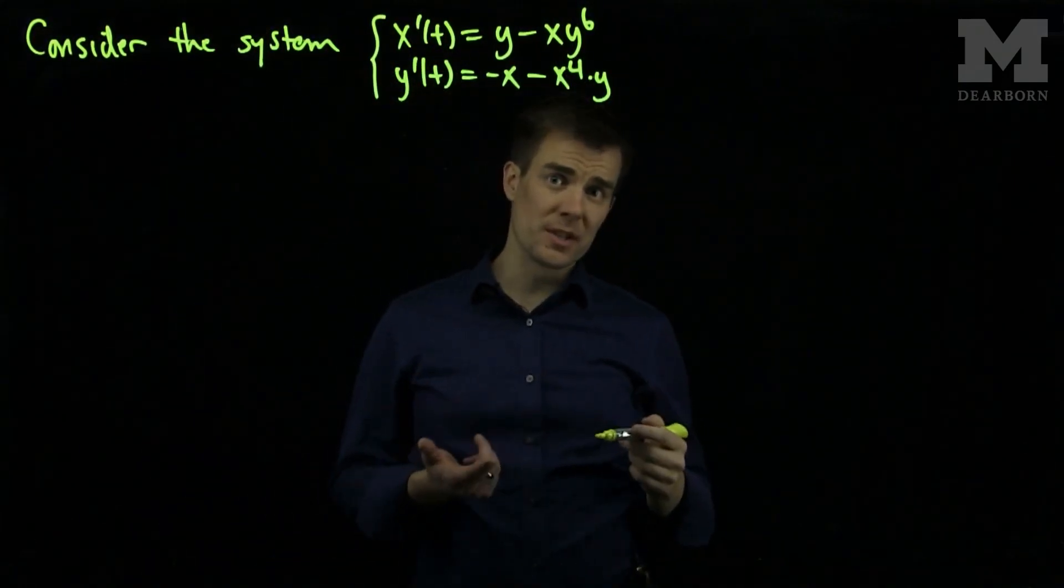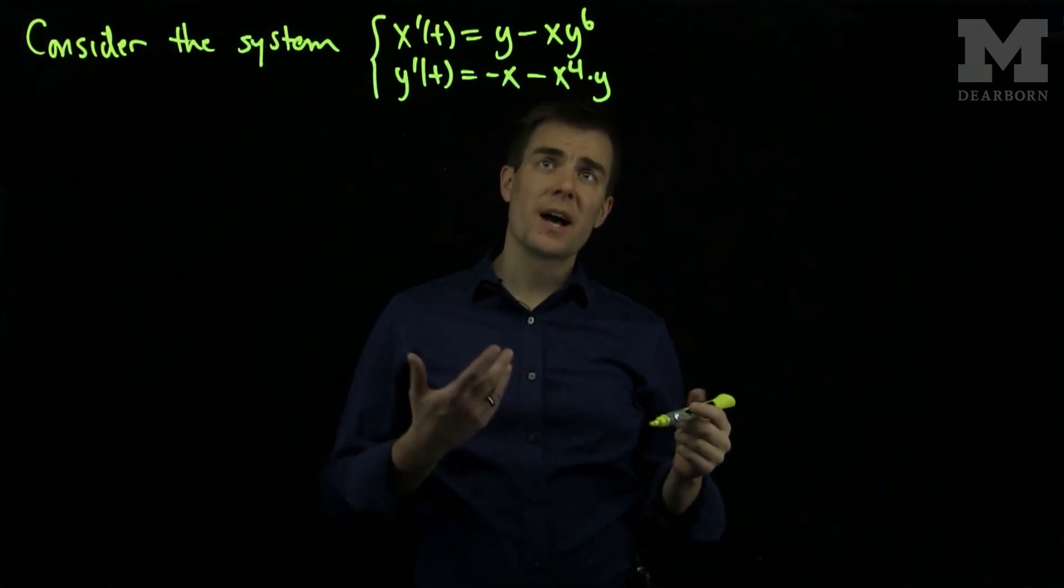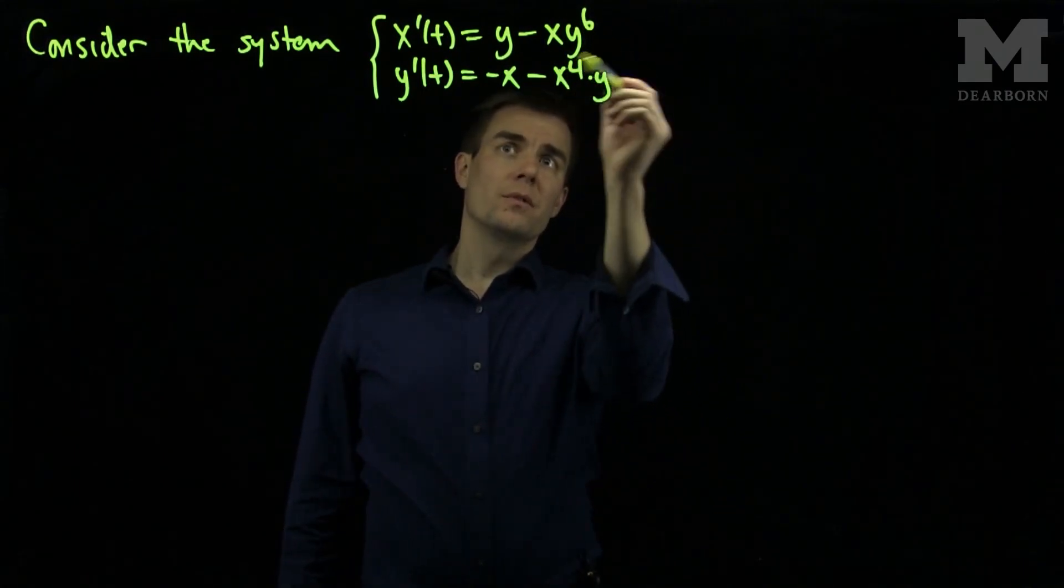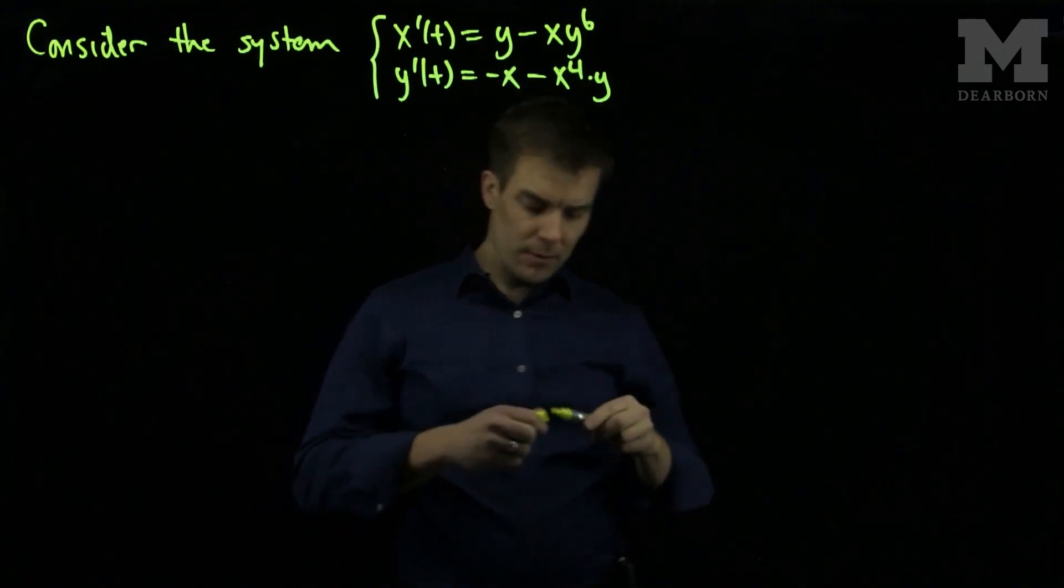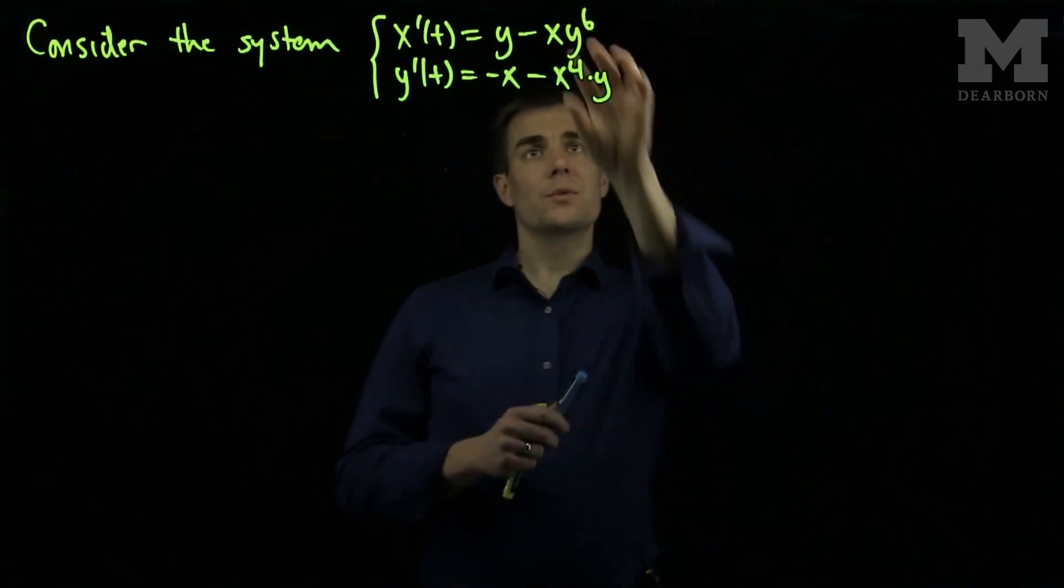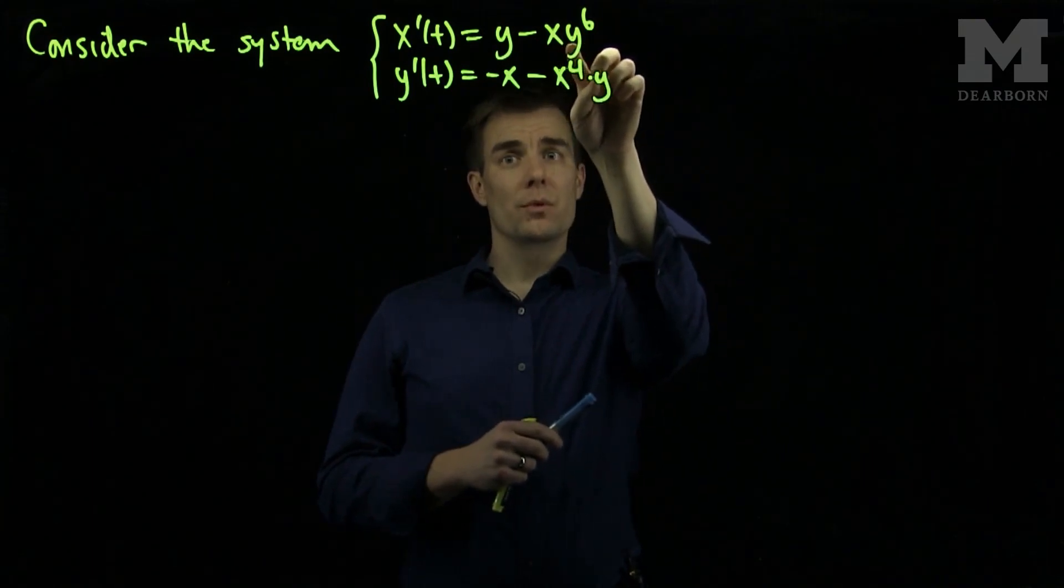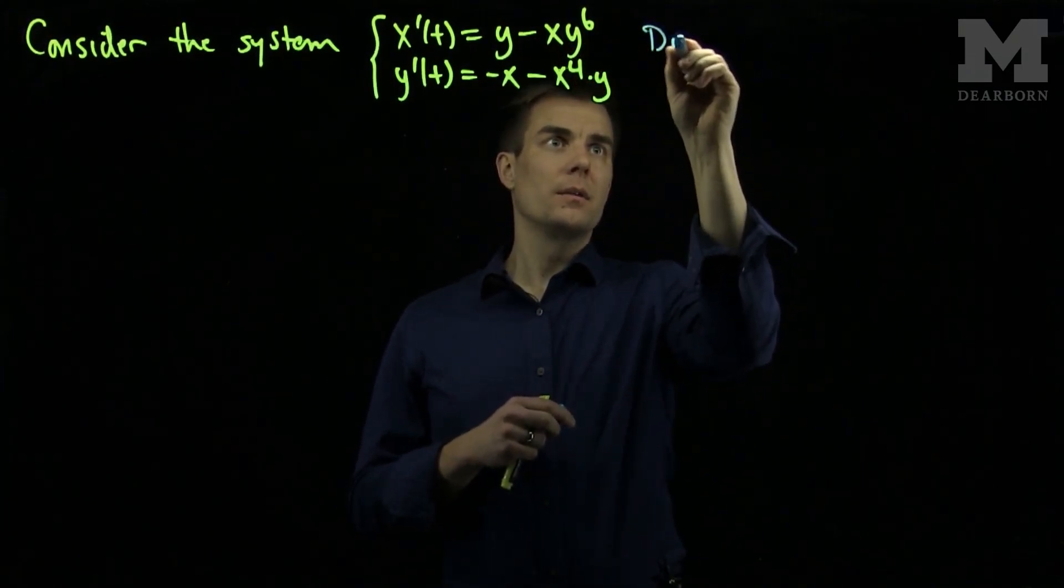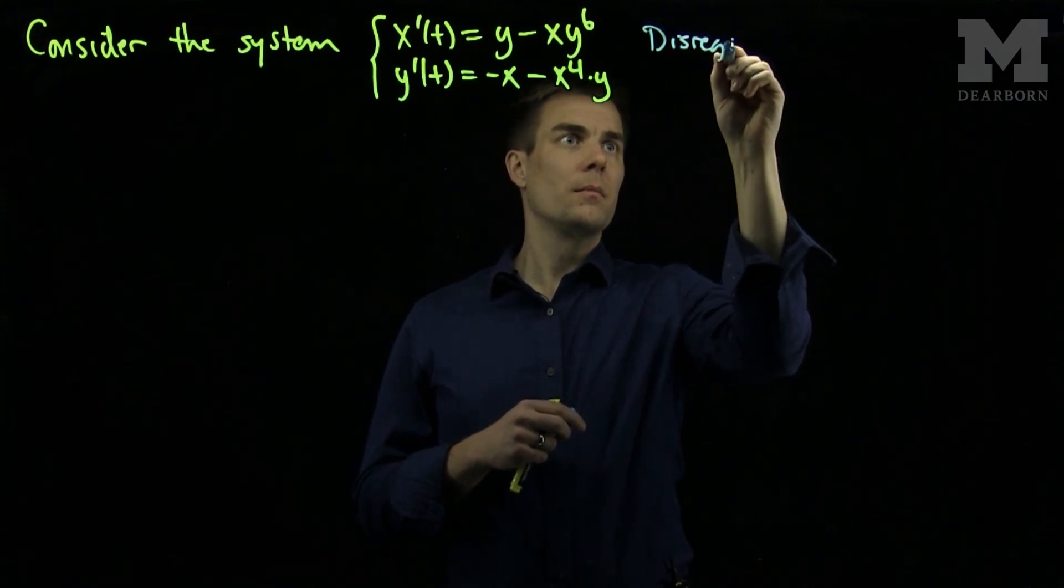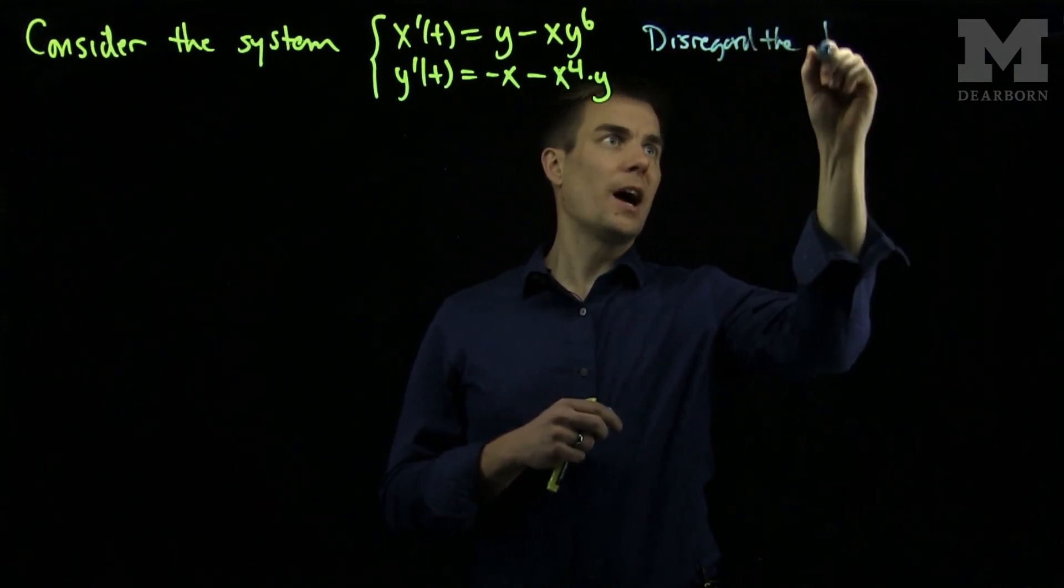Notice first the system is non-linear, and the system is not Hamiltonian. These terms over here will make sure the system is not Hamiltonian. However, if we disregard these higher order terms - this term has order 7, this term has order 5 - if we disregard the higher order terms,